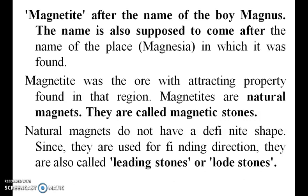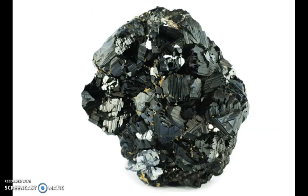Magnetites are natural magnets. They are called magnetic stones. Natural magnets do not have a definite shape. Since they are used for finding direction, they are also called leading stone or lodestone.